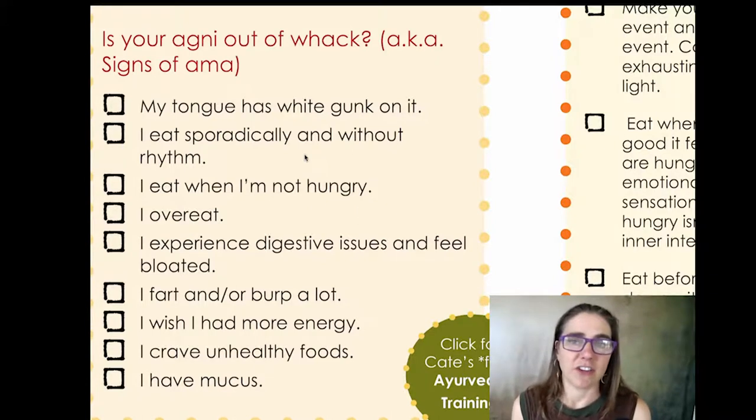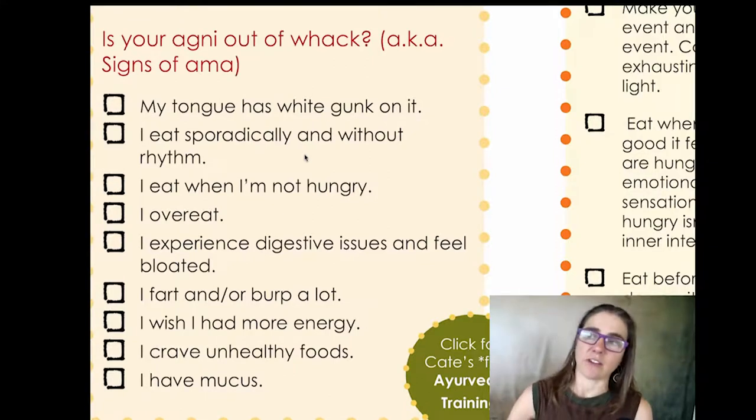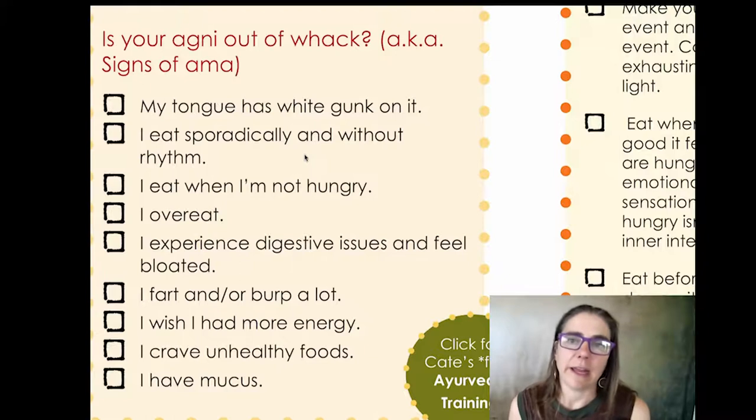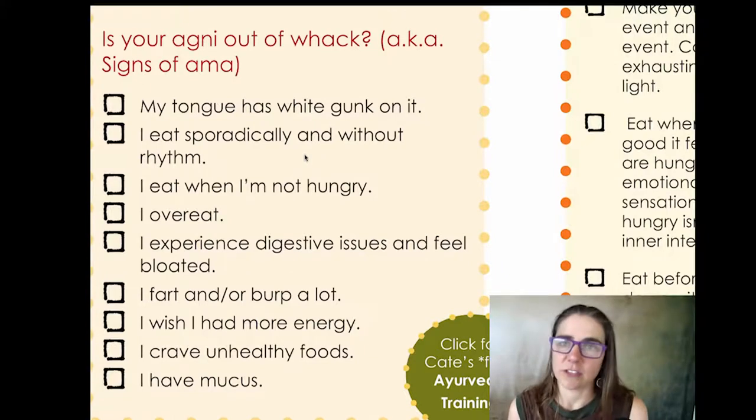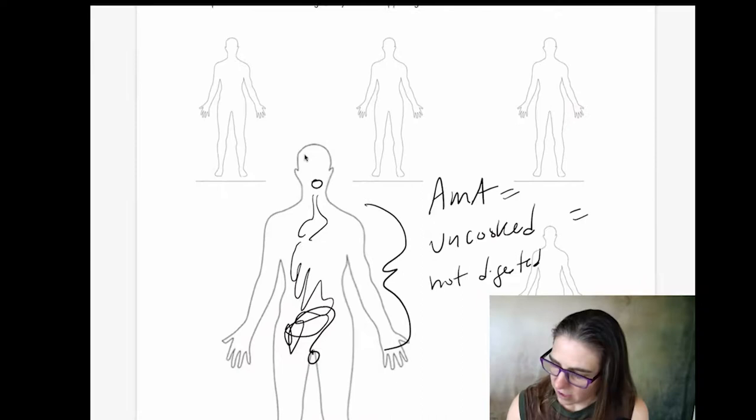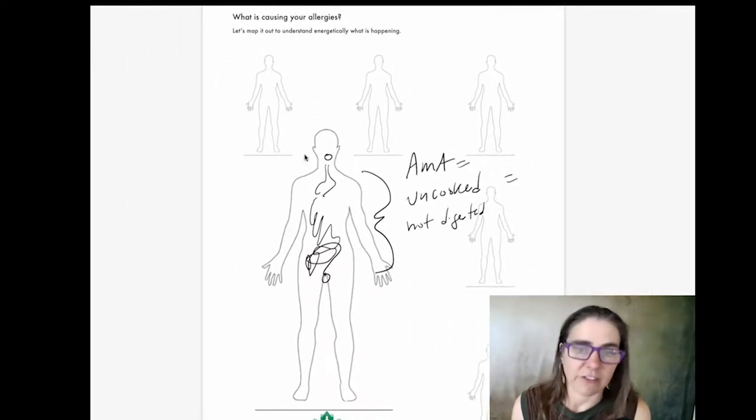If you eat even like six meals a day and you're not able to deeply turn over your fat cells for energy in the body, but instead you're just constantly replenishing your blood sugar, there's a good chance you have Amma. If you overeat regularly, not just like once in a blue moon, but you chronically are eating more than your body can digest. Then you will have stuff that's not digested in your body. And that is called Amma. If you experienced digestive issues and feel bloated, you have Amma. If you fart and burp a lot, that's a sign of Amma. If you crave unhealthy foods, that's another sign of Amma. If you have mucus, that's another sign of Amma. If when you wake up, you feel heavy and lethargic, those are key signs of Amma. Is there uncooked stuff? Is there stuff that's not digested in your system?